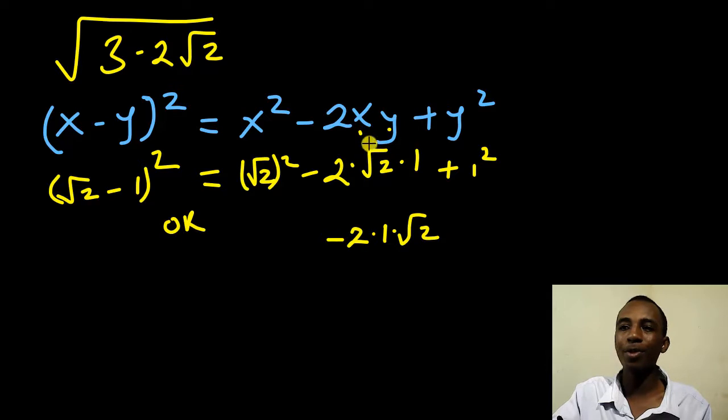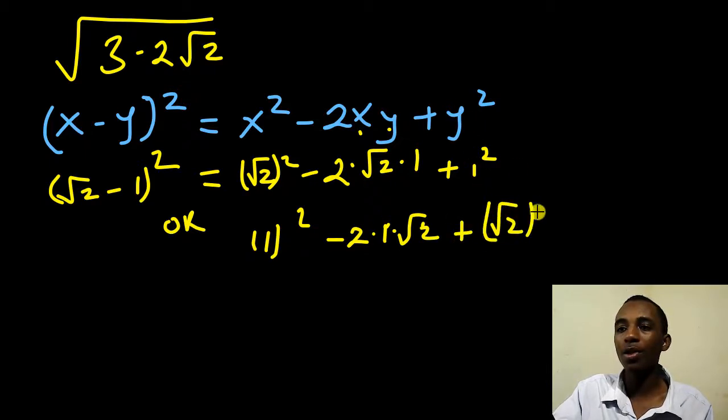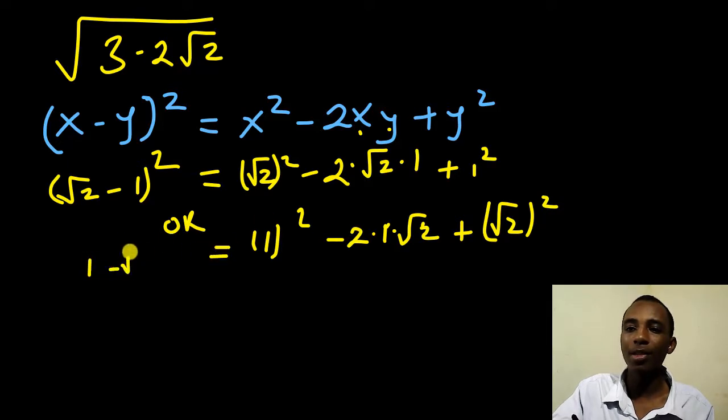So in this case let x be 1 and y be 2. So in that case instead of x squared I'll have 1 squared here, and then this side instead of y squared I'll have square root of 2 squared. And this is 1 minus root 2 squared.